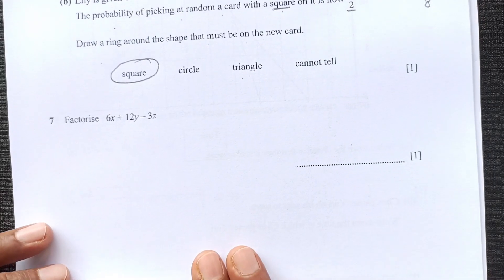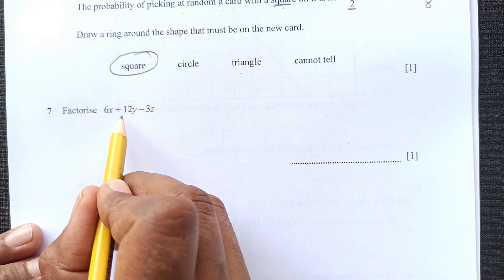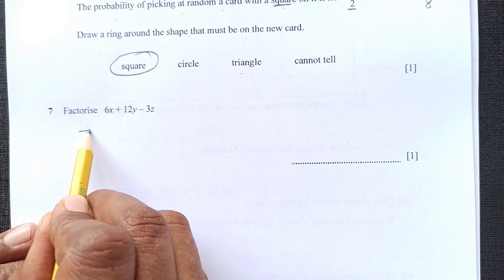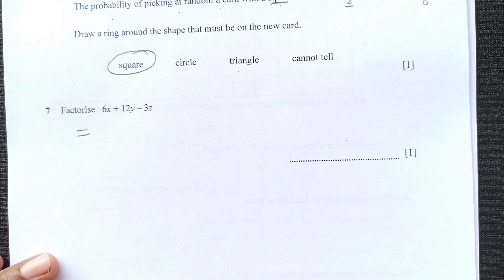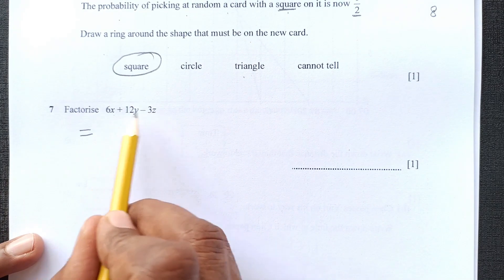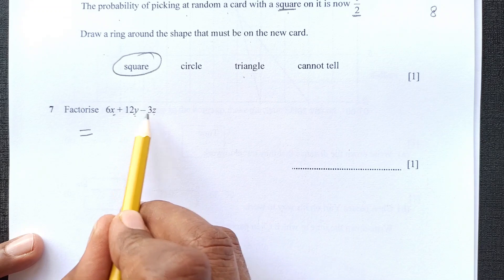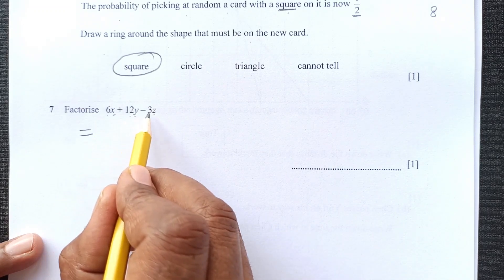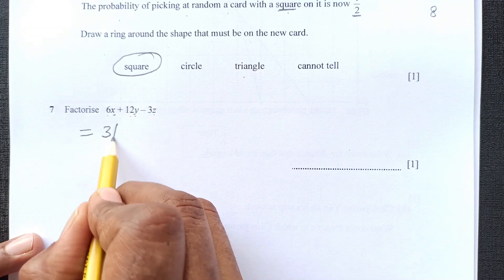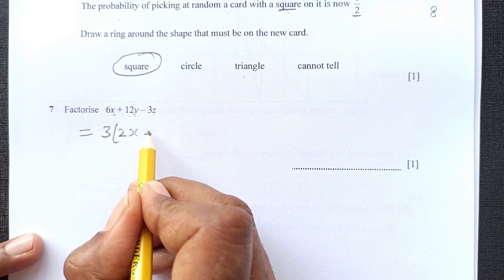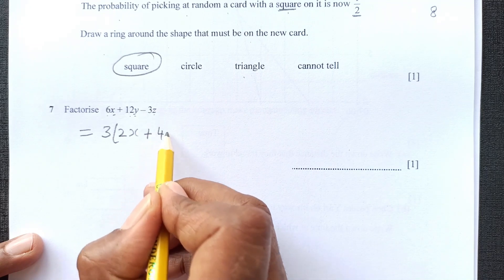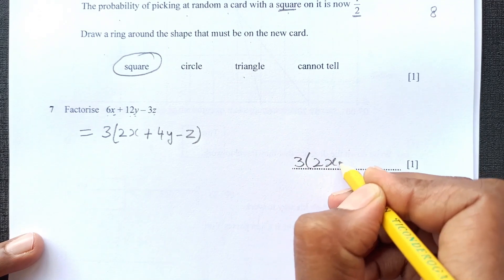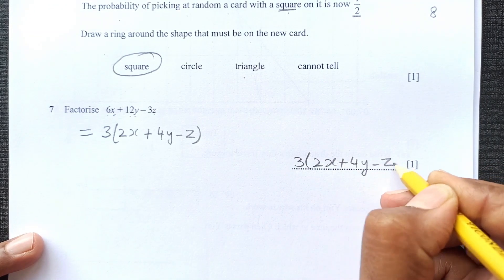Number 7. Factorize 6x plus 12y minus 3z. If we need to factorize, we need to take whatever is common. x, y, z variables are different. So we can just take out the number. The numbers are multiples of 3. So 3 is common here. 3 times 2x plus 3 times 4y minus z. That is going to be our answer here. There is nothing else that we can factorize.